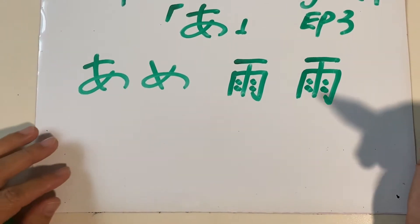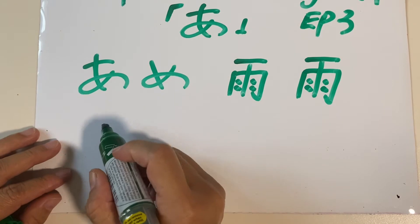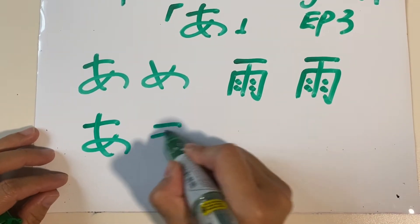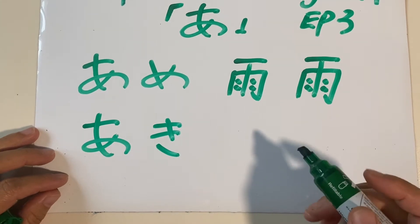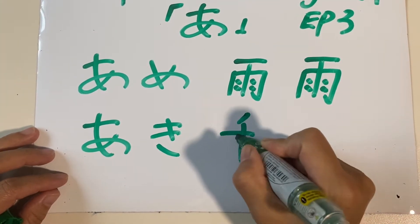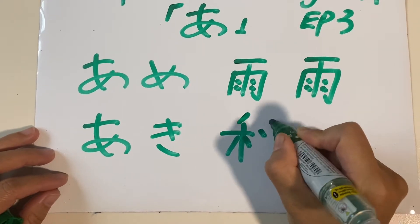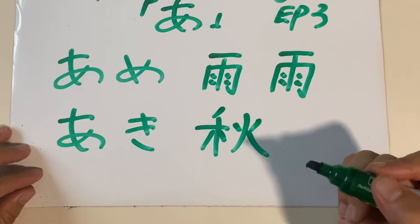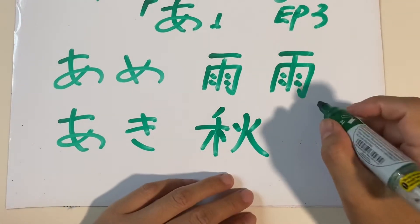Ii desu ka? Ame. Okay, another word I would like to share with you is aki. Aki. This is the kanji. Alright. Mo ikai, let's write one more time.